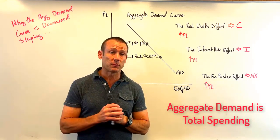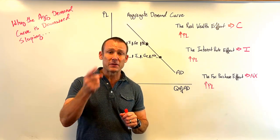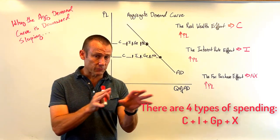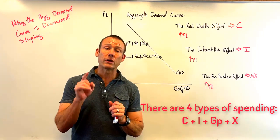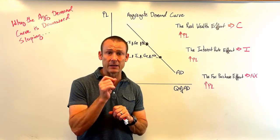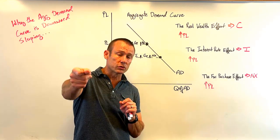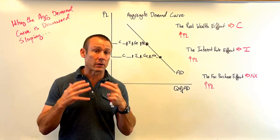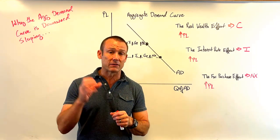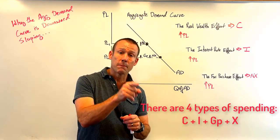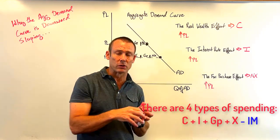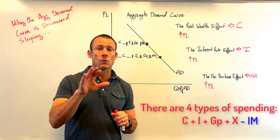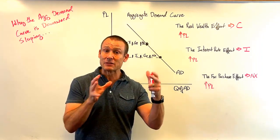We have four types of spending: consumption, investment, government purchases, and exports. When we calculate aggregate demand — total demand for domestically produced goods and services — we also subtract out any spending on imports, since that was produced abroad. So aggregate demand equals consumption plus investment plus government purchases plus exports minus imports, and that exports minus imports we call net exports.